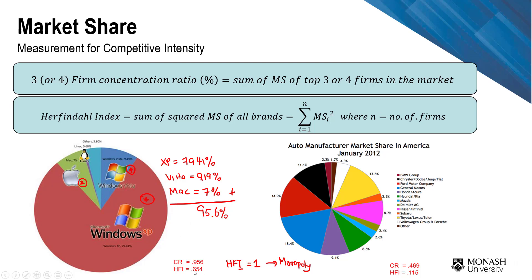For the operating system example, the HHI is 0.654 — quite concentrated, though not extreme. In contrast, looking at the auto-manufacturing market share, the pie is more evenly spread. The concentration ratio there has dropped to 46% and the HHI is a very low 0.1, showing that as more players take shares of the market, both the concentration ratio and HHI decline compared to a very concentrated market like operating systems.